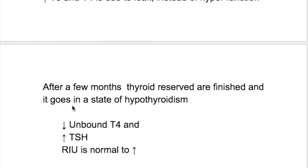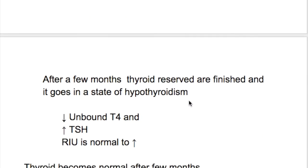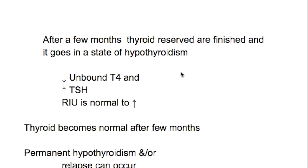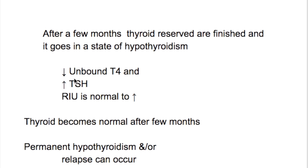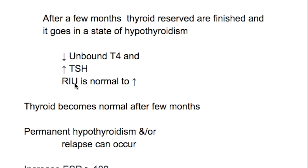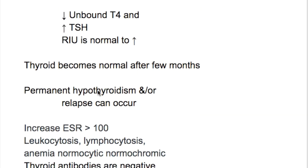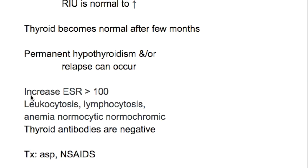After a few months, thyroid reserves are exhausted and the patient enters a state of hypothyroidism, with decreased unbound T4, increased TSH, and radioiodine uptake that is normal to increased. The thyroid becomes normal after a few months, though permanent hypothyroidism and/or relapse can occur.